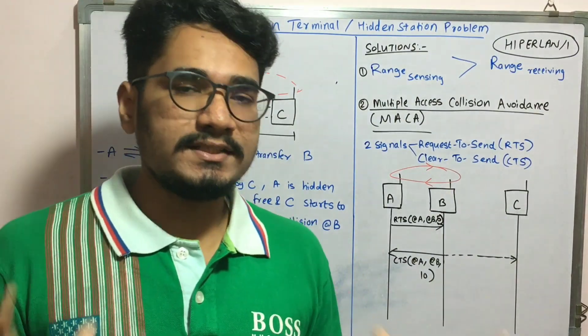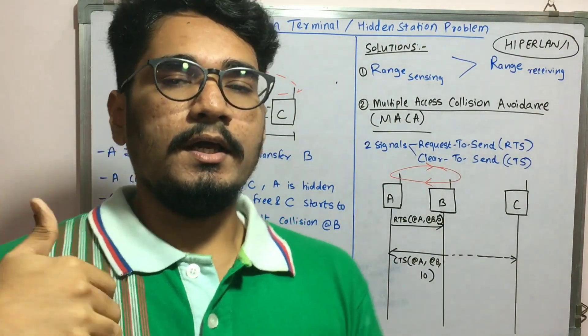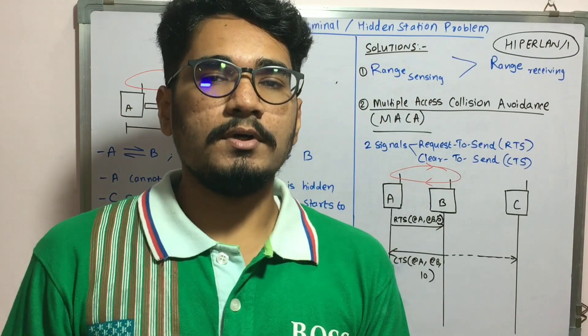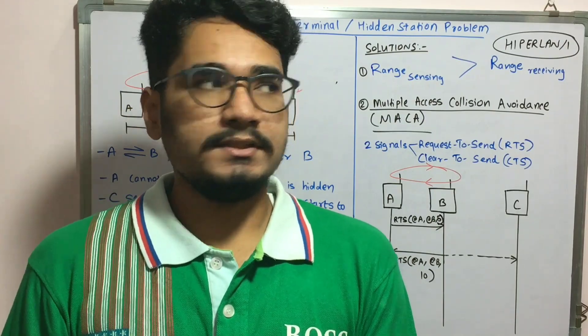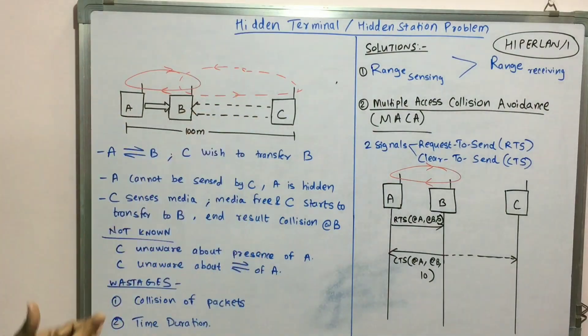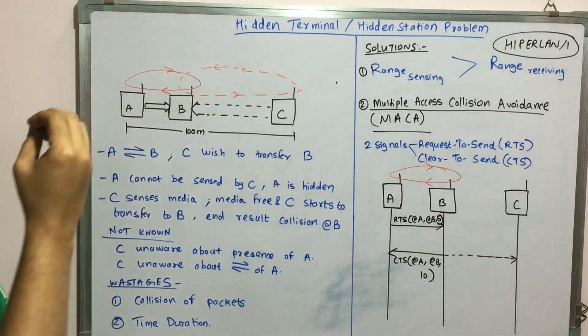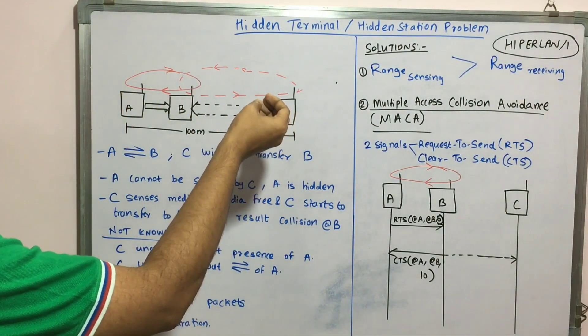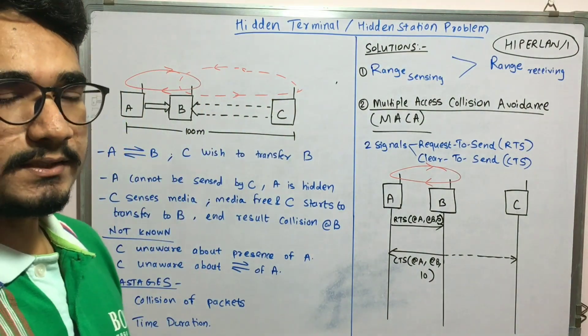In human beings also, if you want to approach some person, we'll just see if any person is there or not. That's basically kind of sensing. Since it sees that the medium is free, it will fall under the wrong impression that the medium is free.